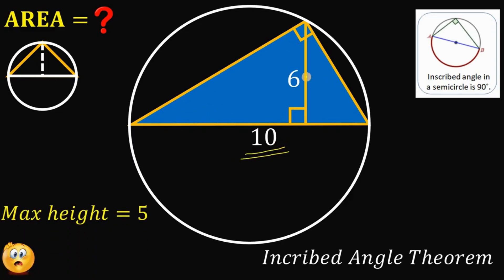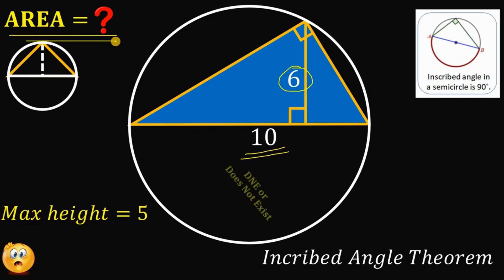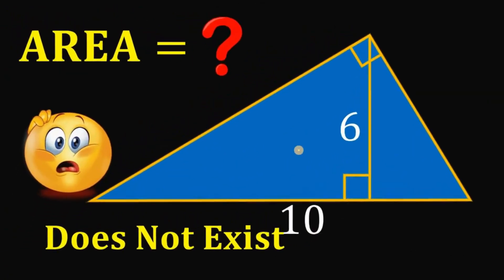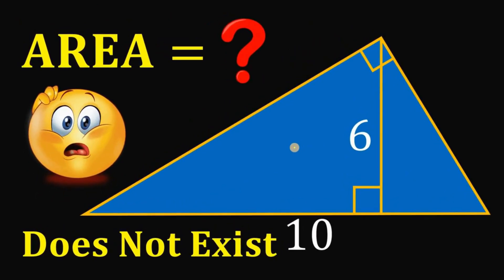On our given, the height is 6 units. Therefore, this triangle does not even exist. If we want to find the area of this triangle, the answer is that the triangle does not exist — and therefore the area of this triangle does not exist. The correct answer to this question is that this figure does not exist, and therefore its area does not exist either.